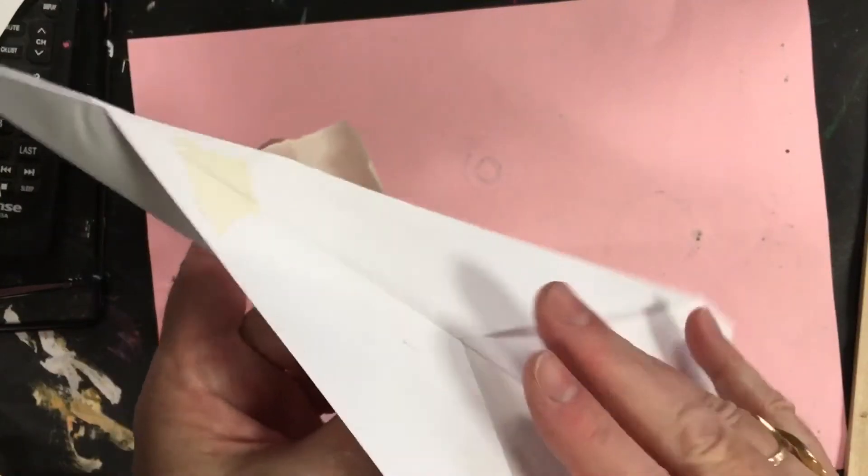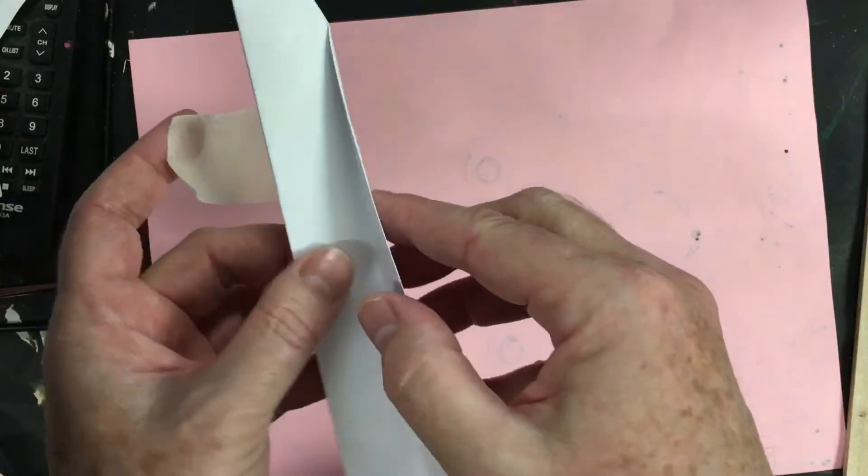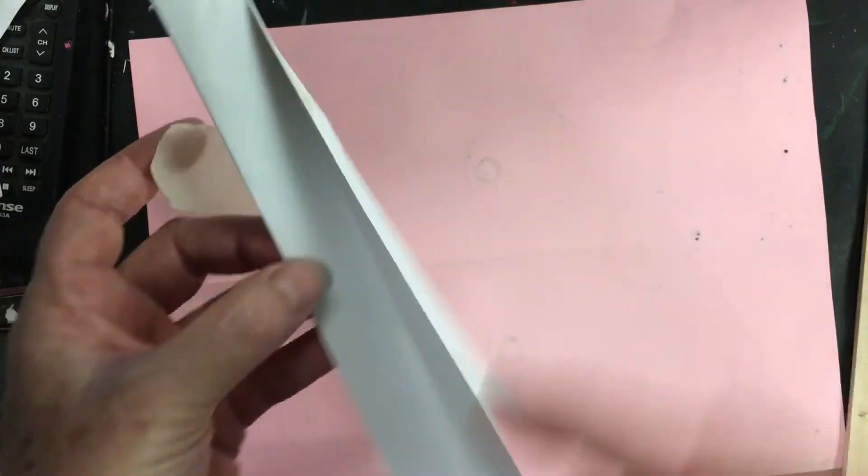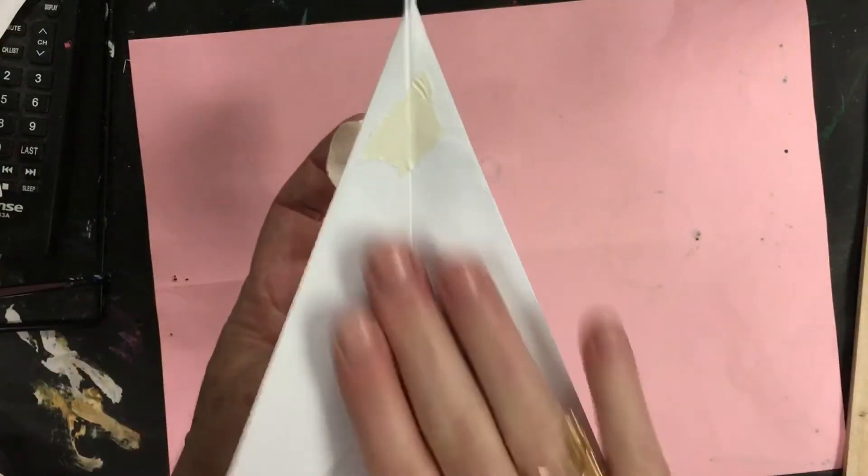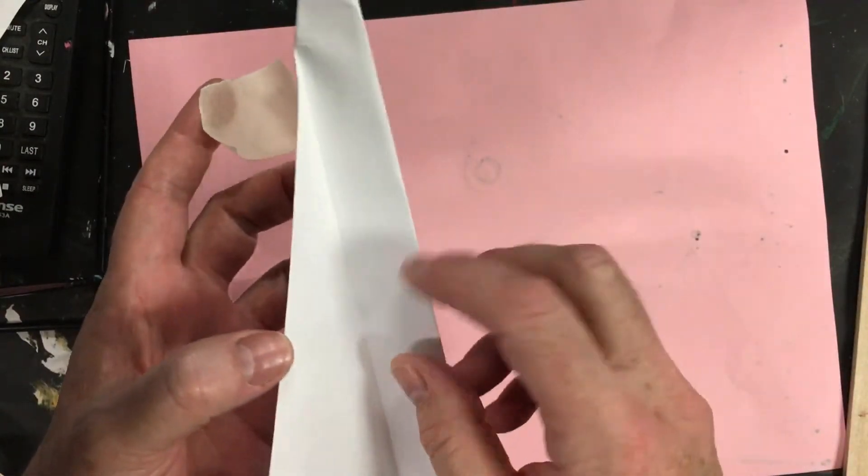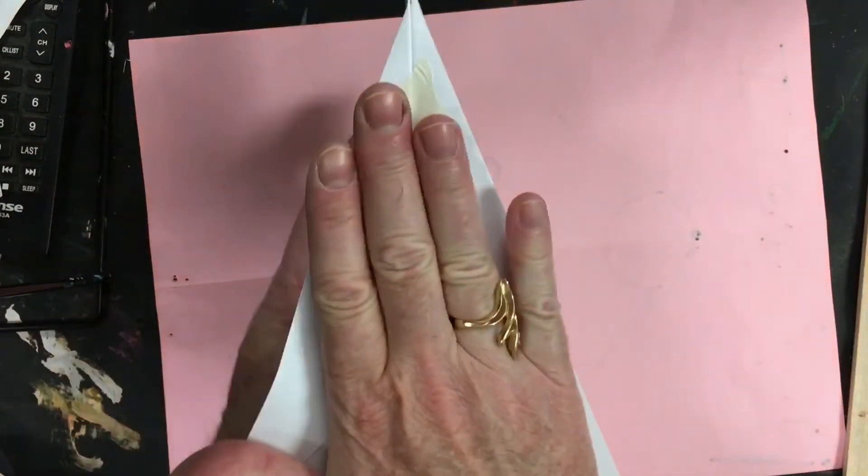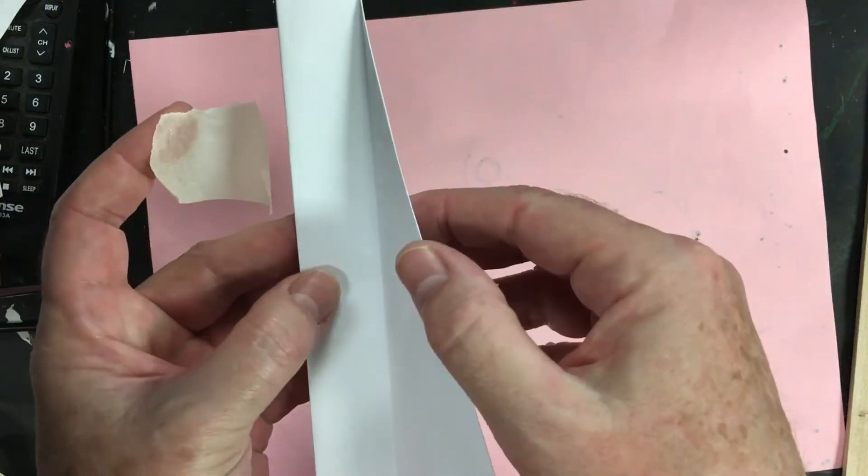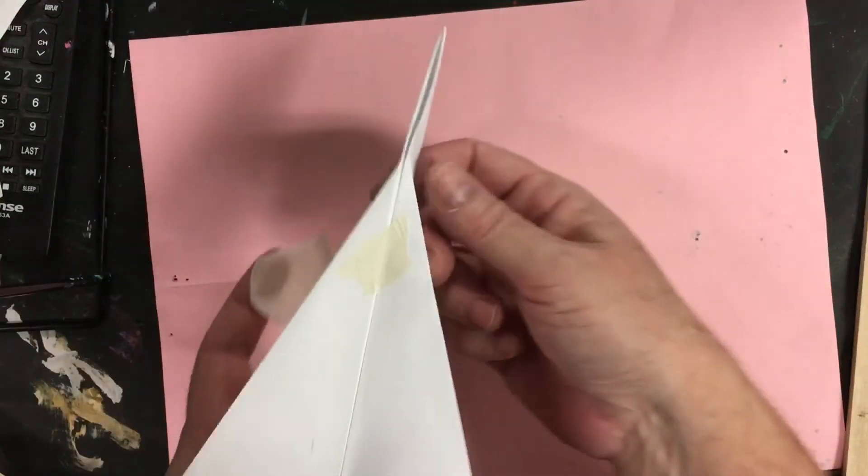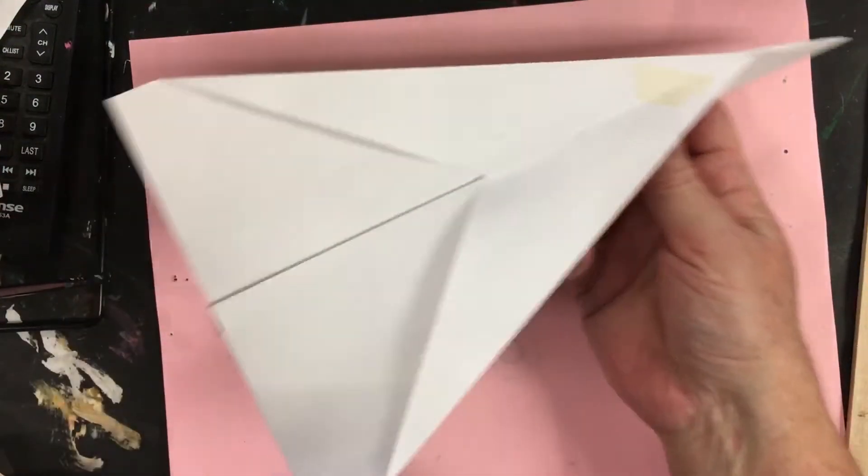Now I want to make sure my wings are forming a right angle to the body. I want these to be straight. And then this forms a right angle here. So this is flat. And there's the plane. And now that's ready to fly.